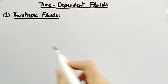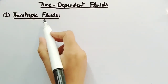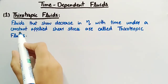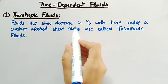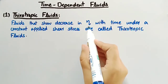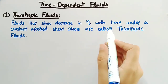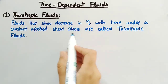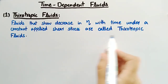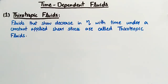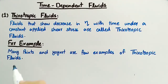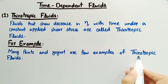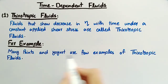Firstly, let's see what are thixotropic fluids. Fluids that show decrease in eta, where eta is apparent viscosity with time under a constant applied shear stress, are called thixotropic fluids. Many paints and yogurt are few examples of thixotropic fluids.